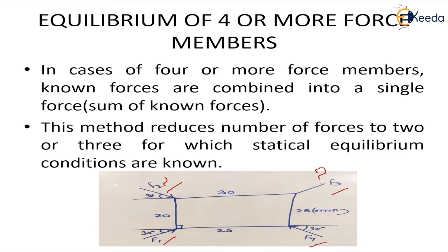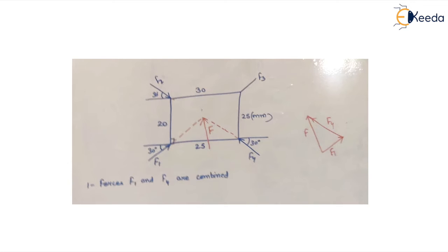This is just a general example. First, whatever known forces are there—we know the value, magnitude, direction, and sense of forces f1 and f4, which are acting at an angle of 30 degrees to the horizontal. We can reduce these two forces to a single force, so we draw the line of action of force f1 and the line of action of force f4.